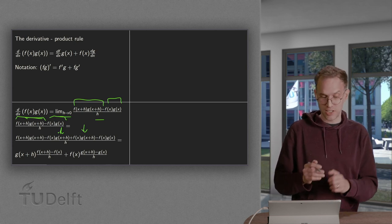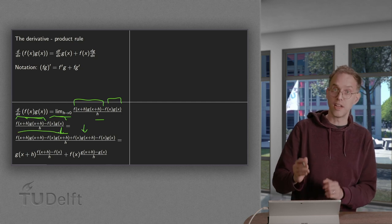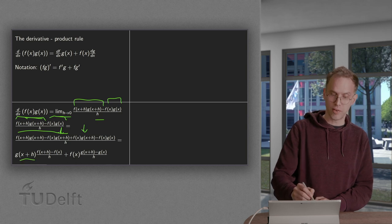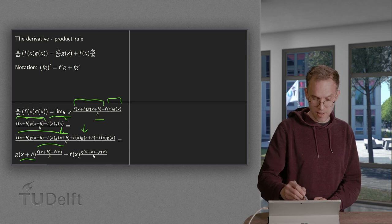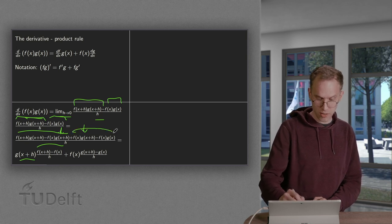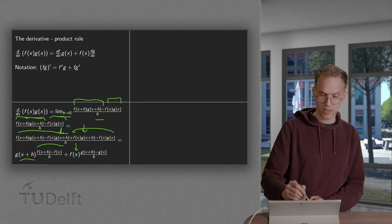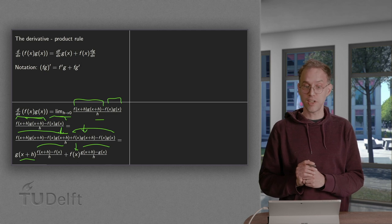Seems a bit silly, but we can add 0. And then for these two terms here we can factor out the g of x plus h and what we are left with is f at x plus h minus f of x divided by h. And then for the second two terms we can factor out f of x and we are left with g at x plus h minus g of x over h.